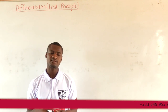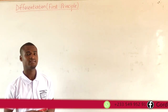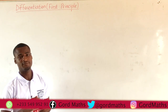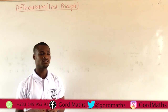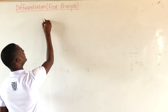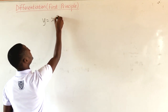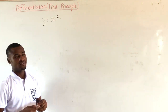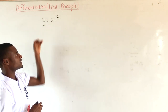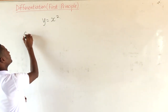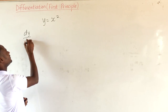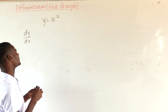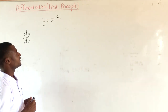In this lesson, we will look at how to find the derivative of a given function using the first principle of differentiation. If we are given a function of y in terms of x, like for example the function y is equal to x squared, then the derivative of this function is called dy/dx, or the derivative of the function y with respect to x.